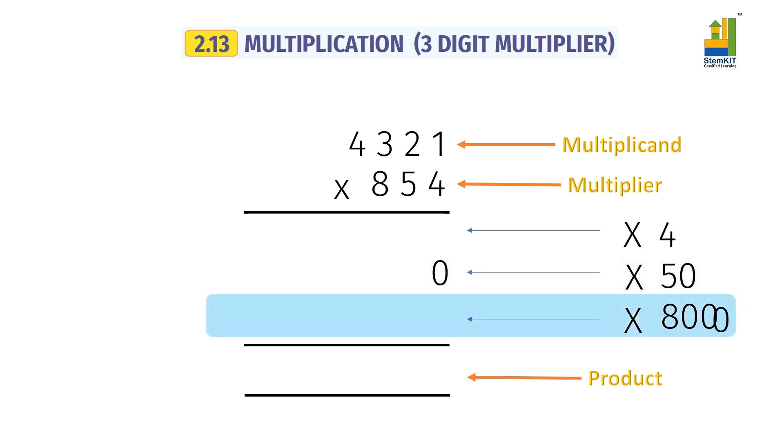Step 3: Multiply the number, or multiplicand, with 100s digit of multiplier. We insert two 0s in this row and multiply by 8.